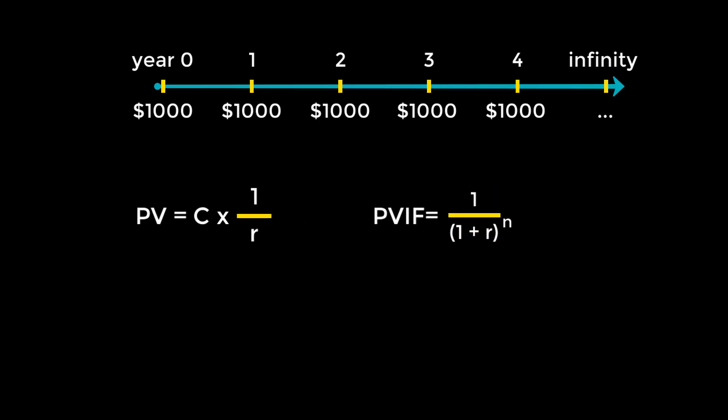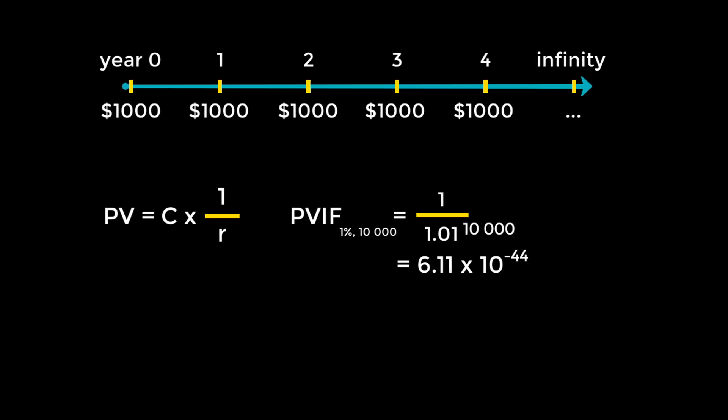Since we can't really calculate using infinity, the best way to simulate it is by using obnoxiously big numbers. So what happens to PVIF when N becomes an obnoxiously big number? As we can see here, it's so close to zero that whatever residual value it has is negligible.